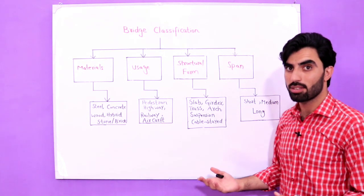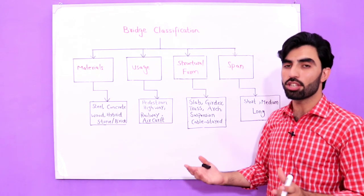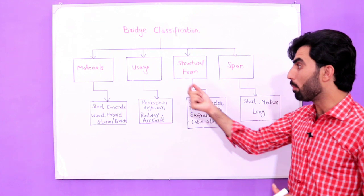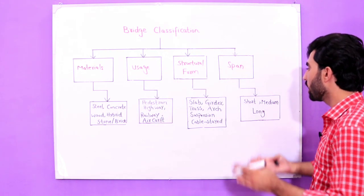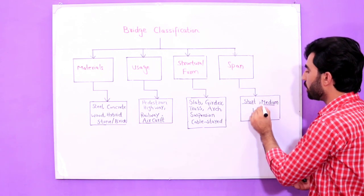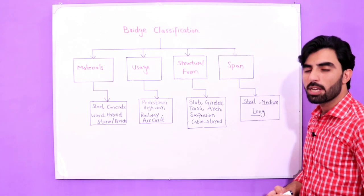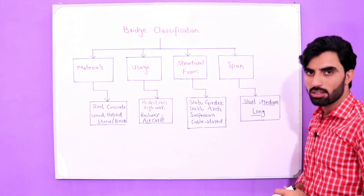The last one is about span. There is span in bridge for different materials, for different structure, and for different usage. We have different spans: short, medium, and long, by which we can find its design and usage easily.